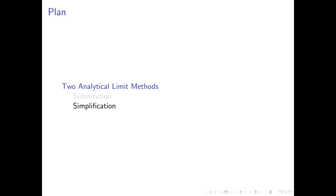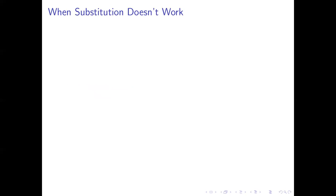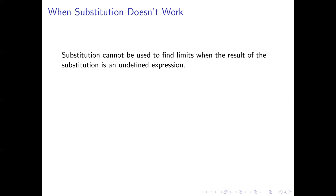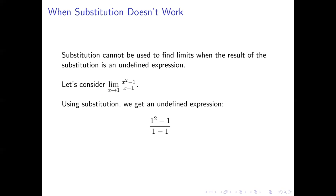Let's turn to the simplification method now, which is a little more complicated, but can be used in cases where substitution doesn't work. Substitution will not work when the result of the substitution is an undefined expression. For example, say we want to find the limit as x approaches 1 of x squared minus 1 over x minus 1. If you try substitution, you get 1 squared minus 1 over 1 minus 1, which turns into 0 over 0 — undefined because it has 0 in the denominator.